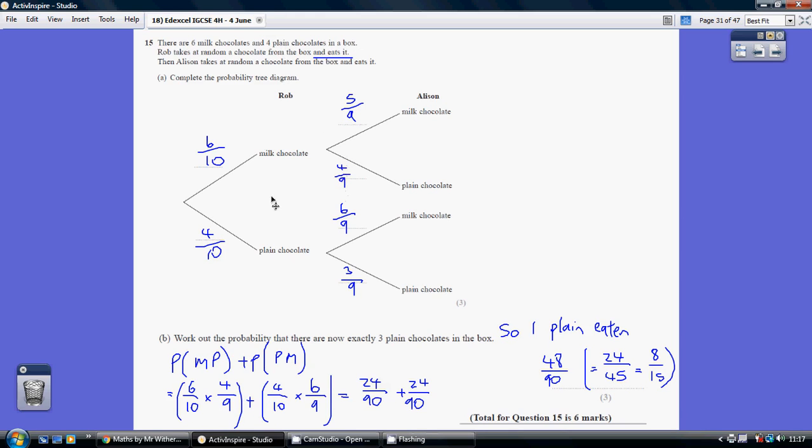Notice how on every occasion the 2 probabilities on this crocodile mouth always add up to a whole. 6 out of 10, 4 out of 10 is a whole. 5 out of 9, 4 out of 9 is a whole.